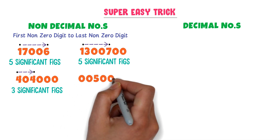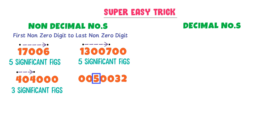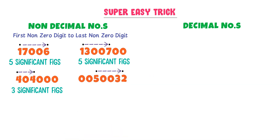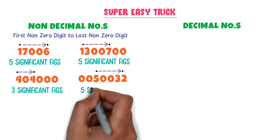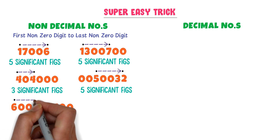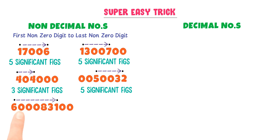Consider another number where the first non-zero digit is 5 and the last non-zero digit is 2. Go from 5 to 2 — 1, 2, 3, 4, 5 — there are five significant figures. Next, consider a number where the first non-zero digit is 6 and the last non-zero digit is 1. Go from 6 to 1 — 1, 2, 3, 4, 5, 6, 7 — there are seven significant figures present in this number.